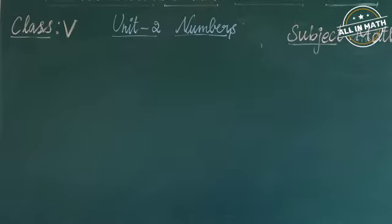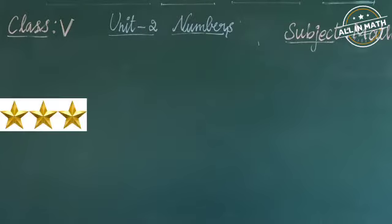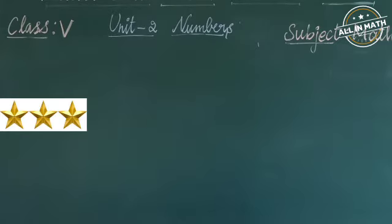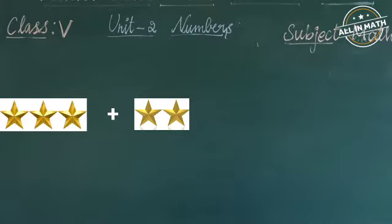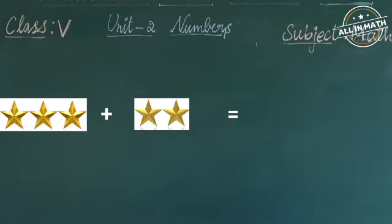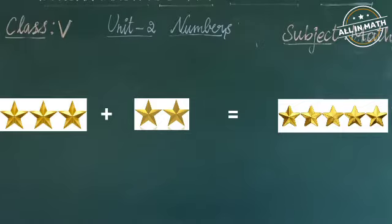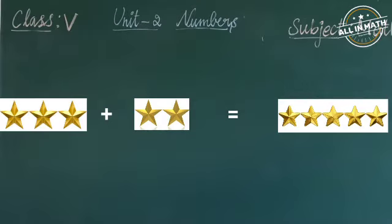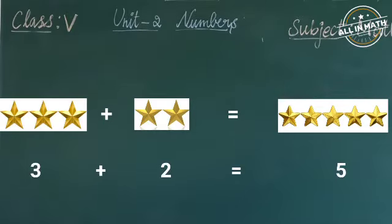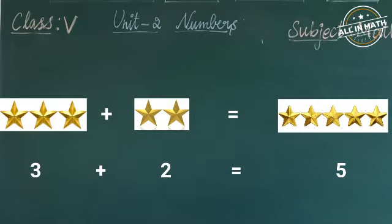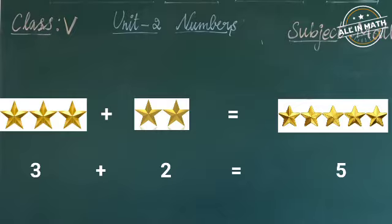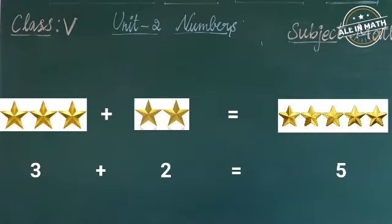For example, how many stars here? Yes, there are 3 stars. Now I am going to add 2 more stars. What is the total? Yes, it is 5. We read it as 3 plus 2 equals 5. When things are put together, we do addition.